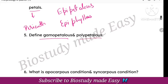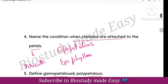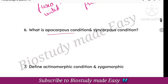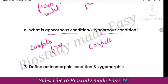Next, define Gamopetalous and Polypetalous. When petals are fused or united, that condition is Gamopetalous. If the petals are free, then they will be Polypetalous. Next, Apocarpous condition — carpels are free. Syncarpous condition — carpels are fused or united.